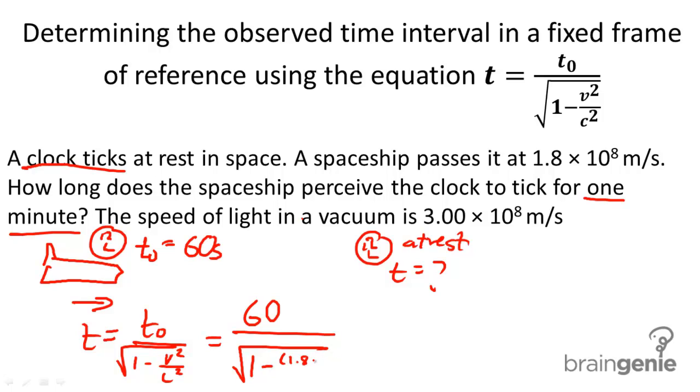1.8, this velocity of the spaceship, times 10 to the 8th squared, divided by 3.00 times 10 to the 8th, also squared. And when we go ahead and evaluate this expression, we get a total of 75 seconds.